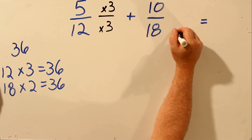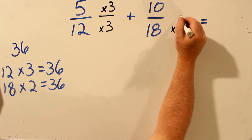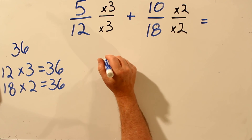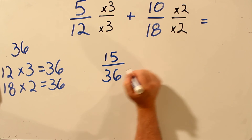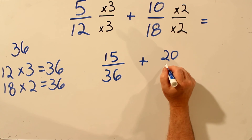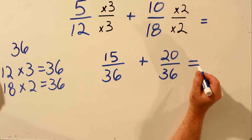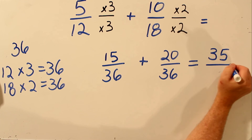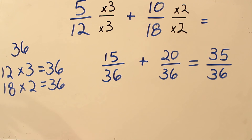And over here, we have to multiply the bottom number by 2 — 18 times 2 is 36. And if we multiply the bottom number by 2, we multiply the top number by 2. We'll do our multiplication: 5 times 3 is 15, and 12 times 3 is 36. Here we have 10 times 2 is 20, and 18 times 2 is 36. Now we can add these two fractions because the bottom number is the same. Add across the top: 15 plus 20 is 35, and keep the bottom number the same. 35 over 36. And that's how you add simple fractions.